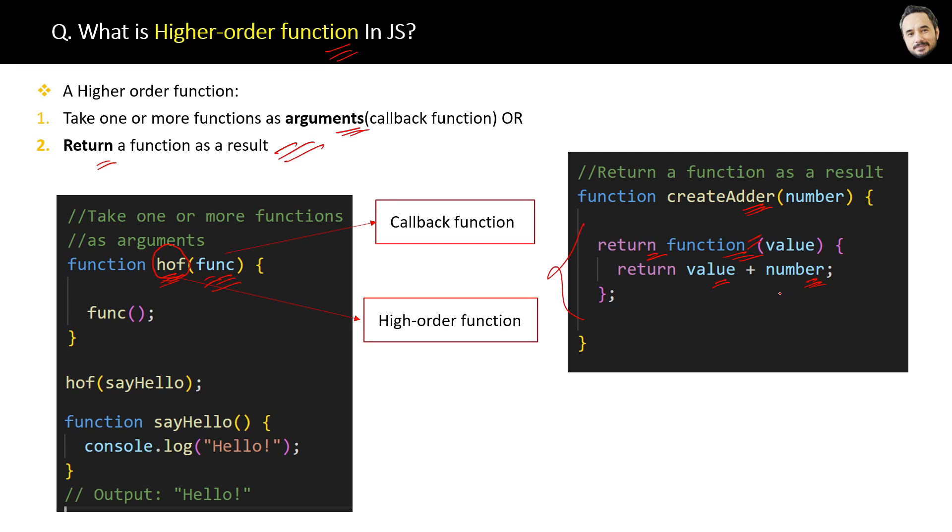And this function is anonymous but it can be a named function as well, that is not a problem. So when a function returns a function as a result, it is also a higher order function.